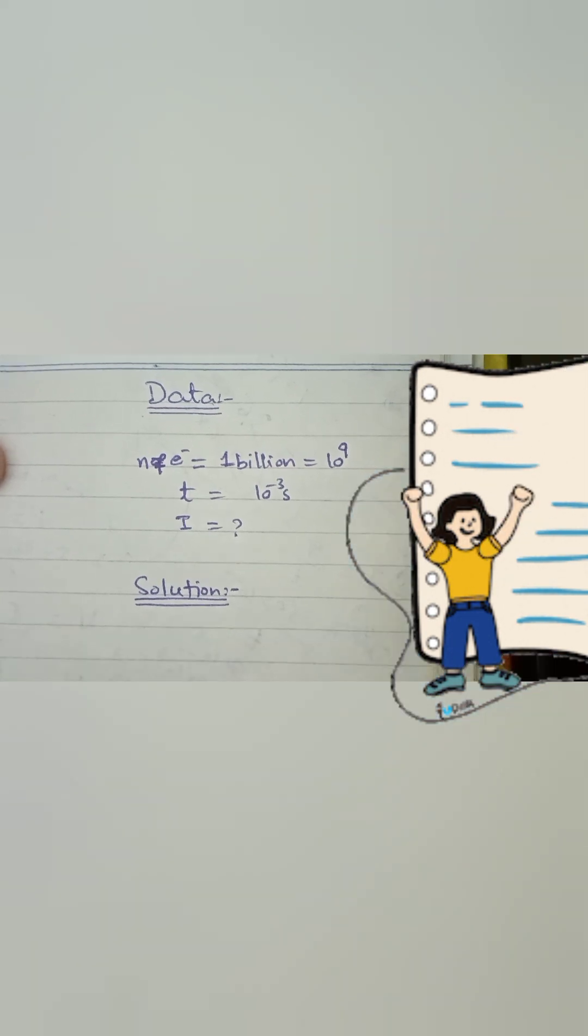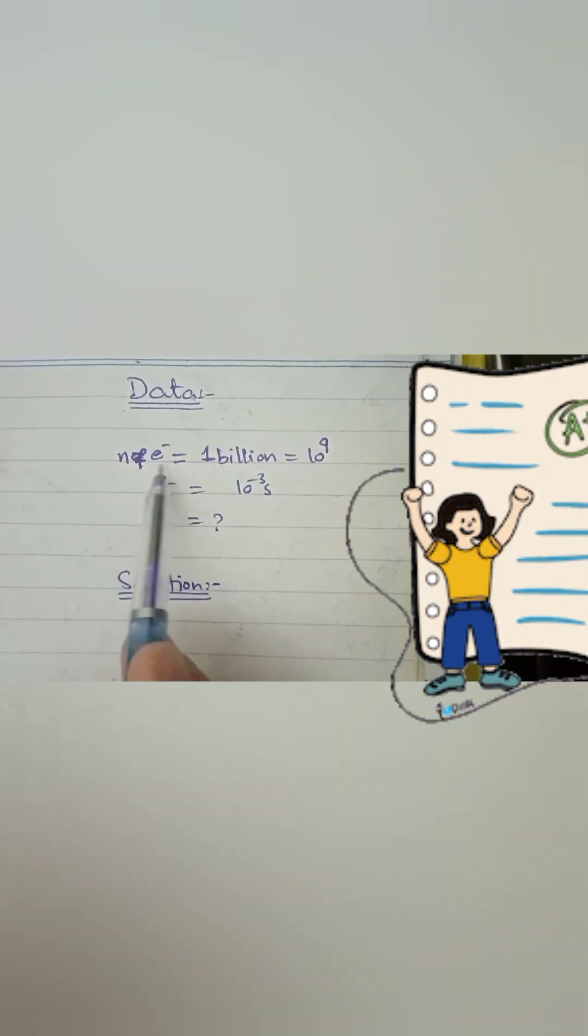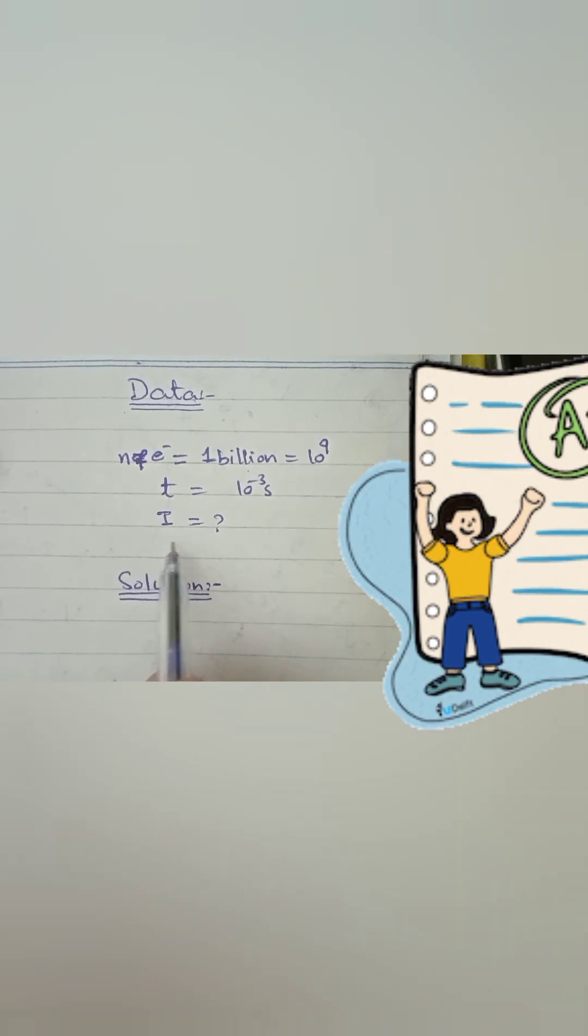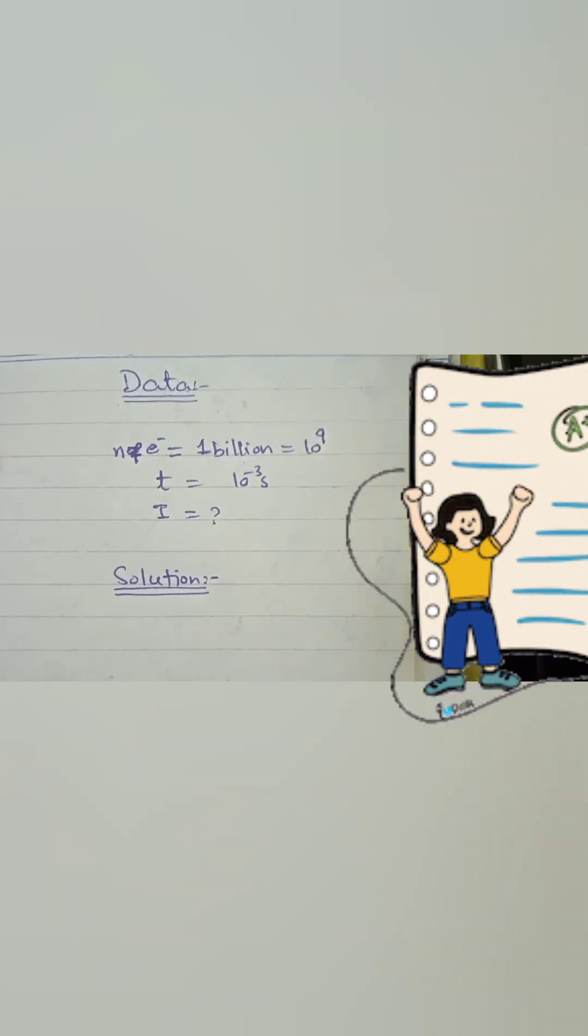What we have is number of electrons given are 1 billion, which equals 10 raised to the power 9. Time is 10 raised to the power minus 3 seconds, and current is unknown.